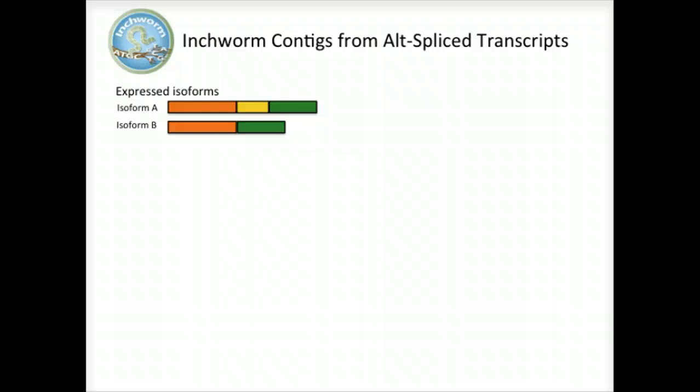Inchworm alone performs well at reconstructing full-length transcripts, but in the case of alternative splicing, Inchworm alone is unable to reconstruct full-length transcripts for each of the isoforms. This is because it assembles contigs from unique k-mers, and the sequences shared between isoforms can be reported in only one Inchworm contig.